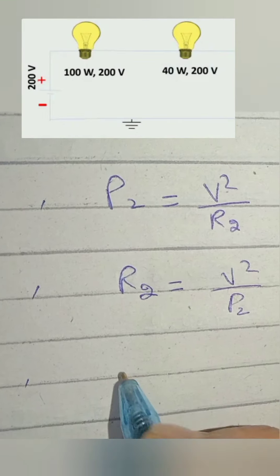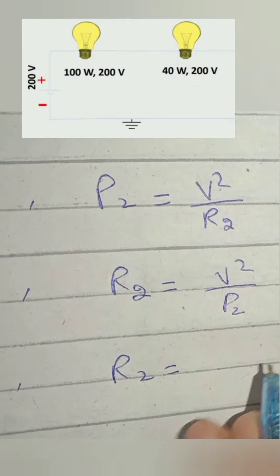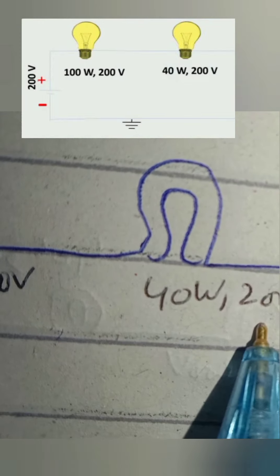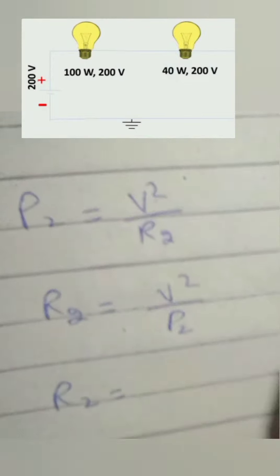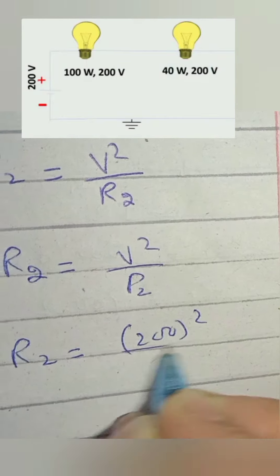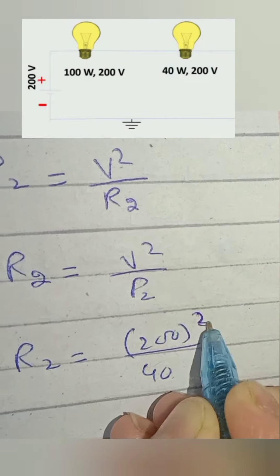As V is 200 in both the bulbs, that is why I have used V in both the equations. V is 200 volts for bulb 2. Put the value of V2 as 200 whole square and power of second bulb is 40.